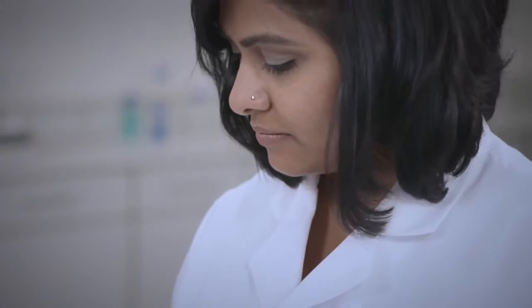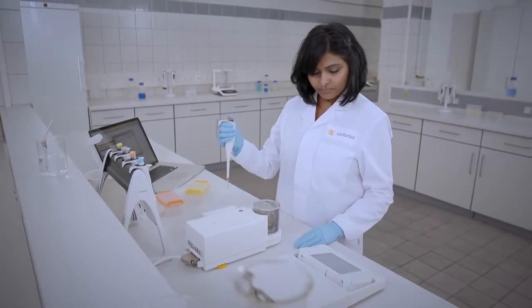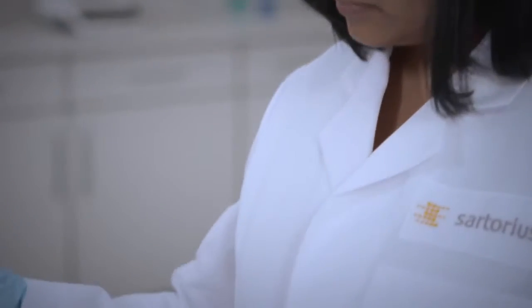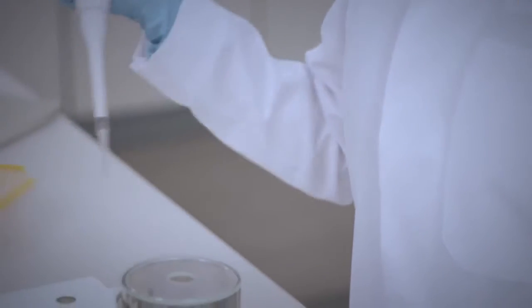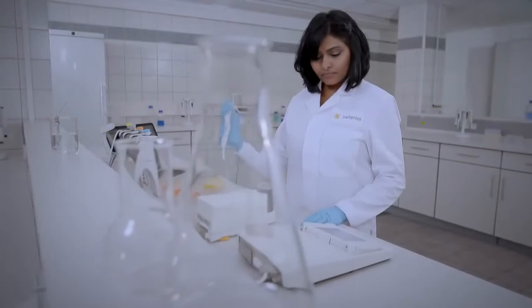When pipetting on the balance hold the pipette at a 45 degree angle for the best accuracy. Hold the tip against the wall of the vessel and expel the entire sample. The smaller the volume of your sample the more important this step becomes.